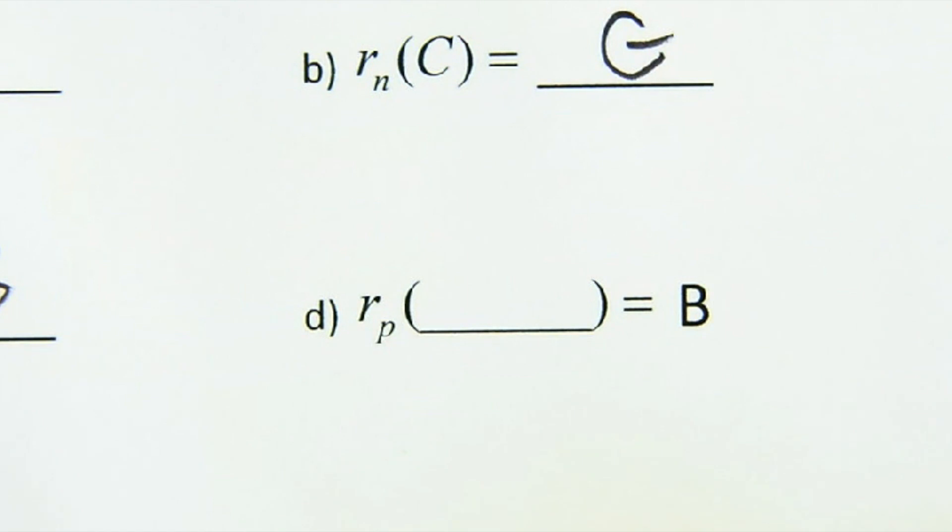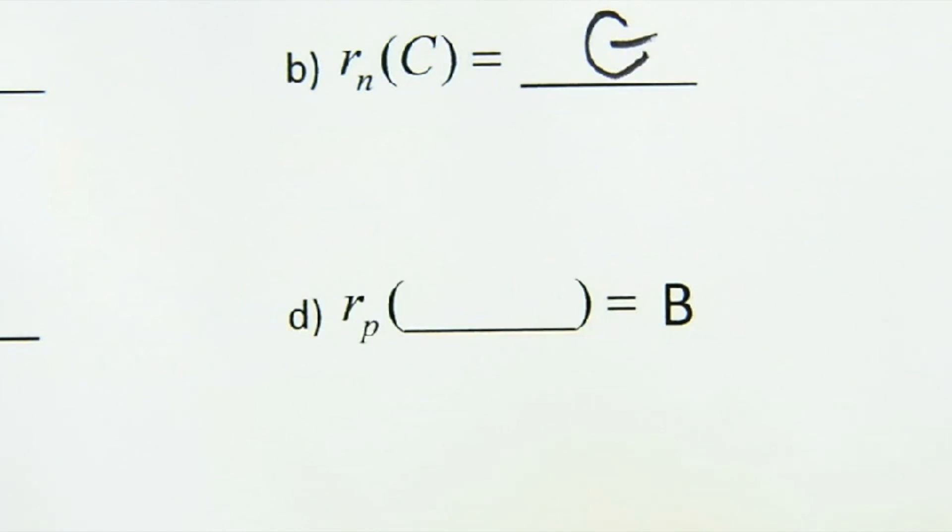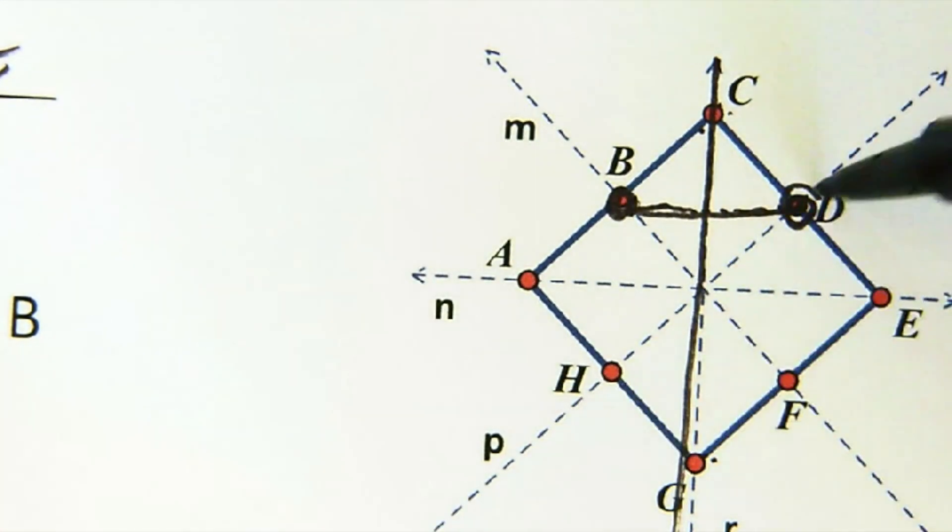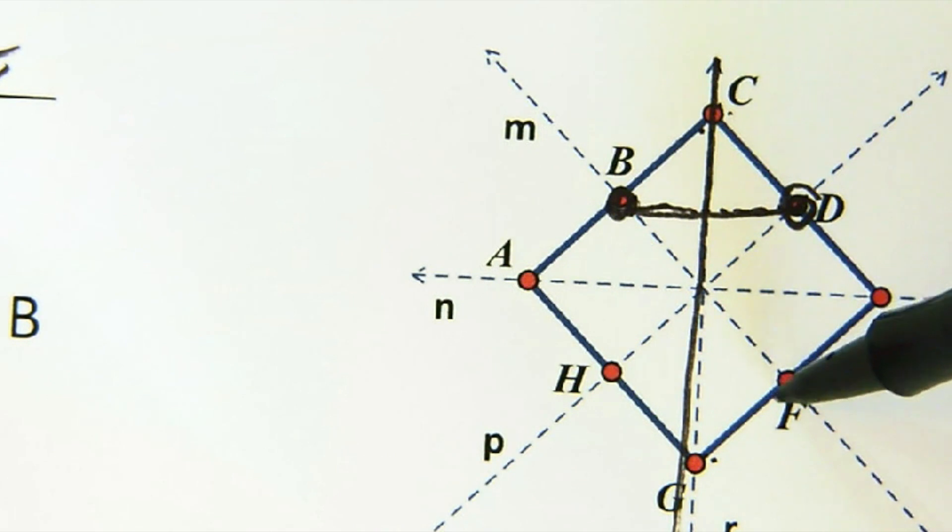The last one gives us the image and wants the pre-image. So it landed on B but reflected over P. It landed at B, reflected over P, so it must have been F to reflect over to land there. Good luck—reflections are a lot of fun.